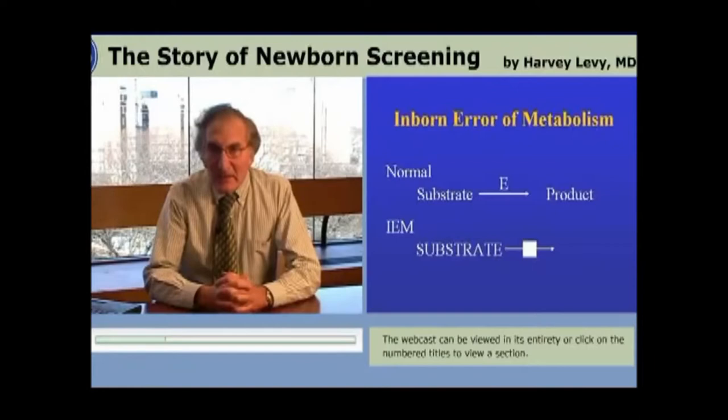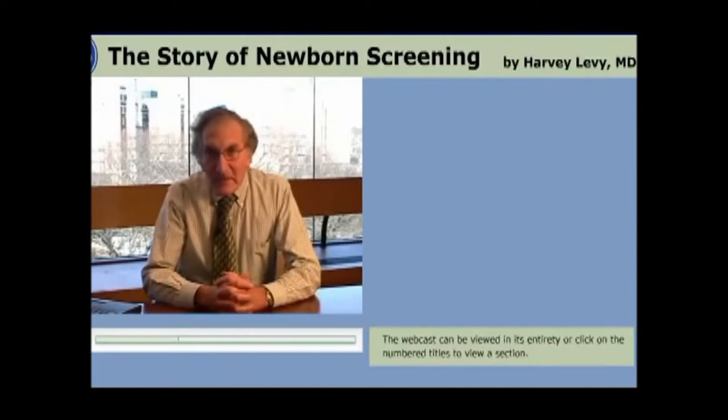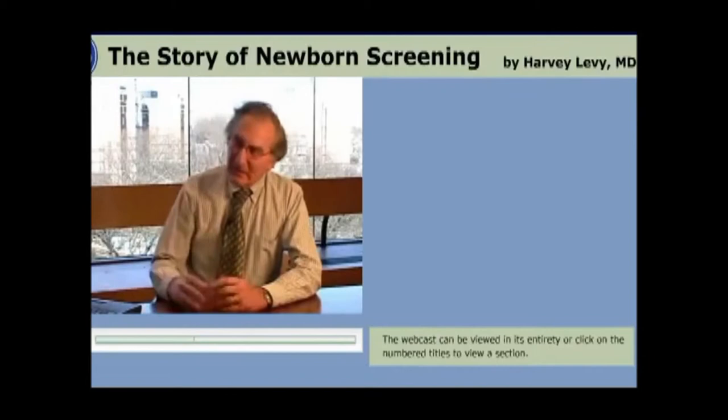This begins, of course, as a genetic mutation in which they cannot produce this metabolic change. In his famous Croonian lectures of 1907 before the Royal Society of Medicine in England, Garrod further said that inborn errors of metabolism advertise their presence in some conspicuous way — either by some strikingly unusual appearance of surface tissues or excreta, or by the excretion of some substance which responds to a test.